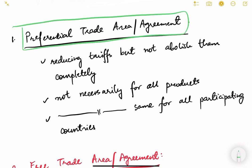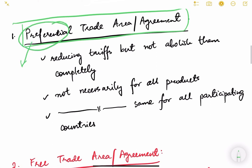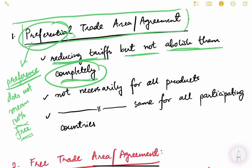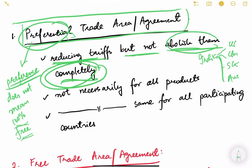A Preferential Trade Area (PTA) means giving preference to a trading partner — it does not mean 100% free trade. It means reducing tariffs but not abolishing them completely. For example, if India has a PTA only with the USA, it will reduce tariffs for the USA, so the tariff for the USA will be less than for other countries, but tariffs are not completely eliminated.